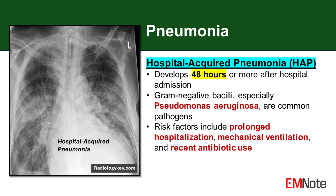In HAP, gram-negative bacilli play a predominant role. Pseudomonas aeruginosa is a particularly concerning pathogen due to its intrinsic antibiotic resistance and ability to form biofilms. Other gram-negative organisms commonly implicated in HAP include Klebsiella pneumoniae, Escherichia coli, and Acinetobacter species.